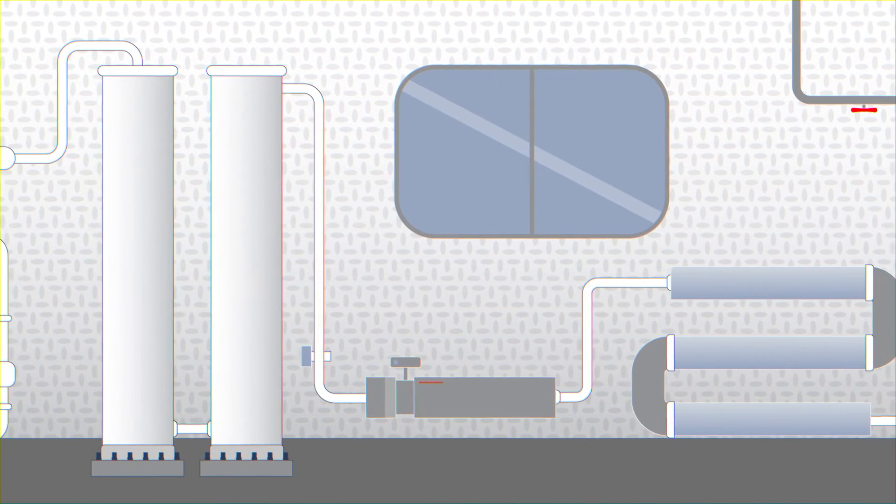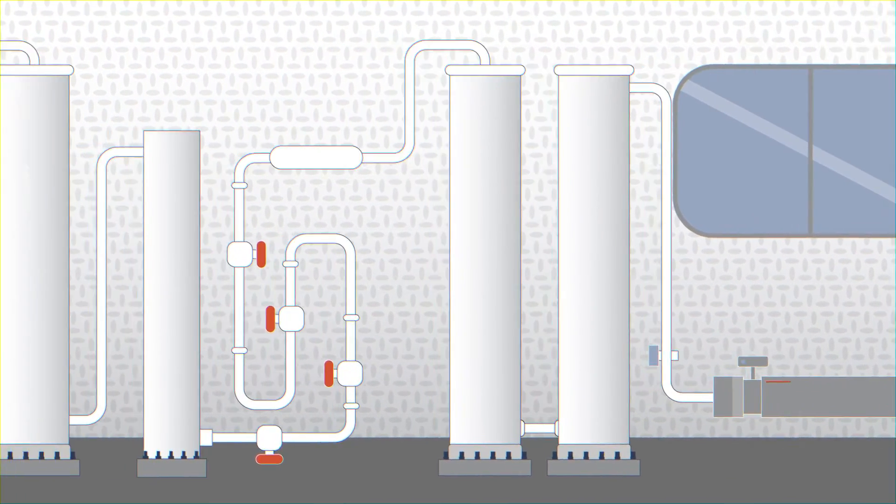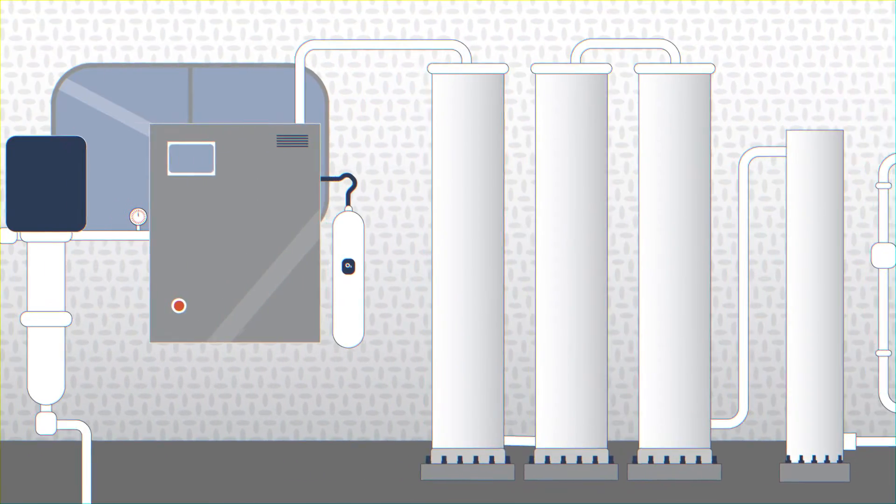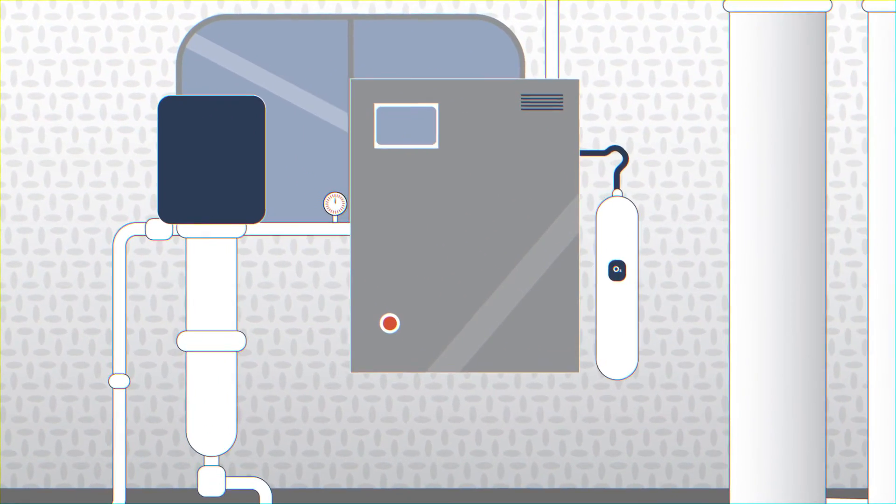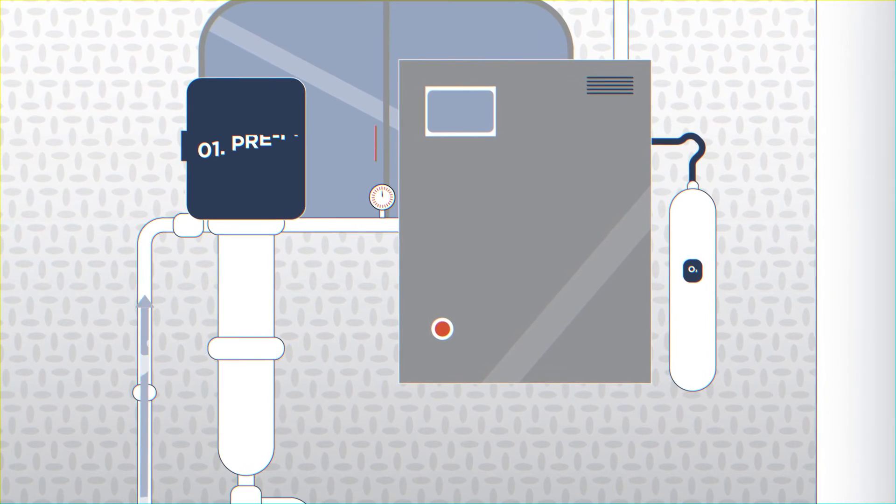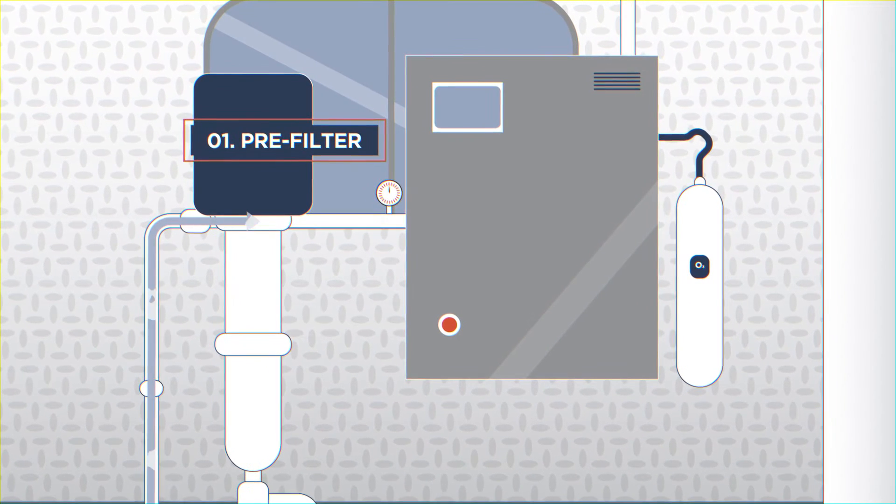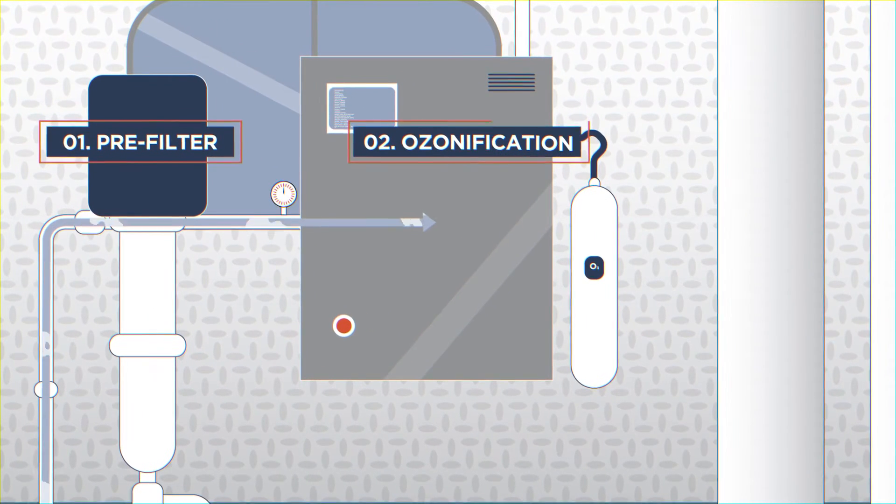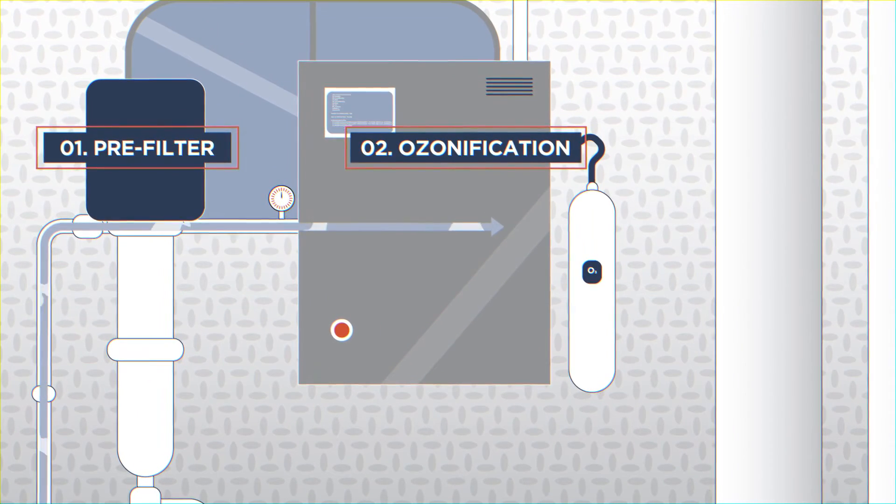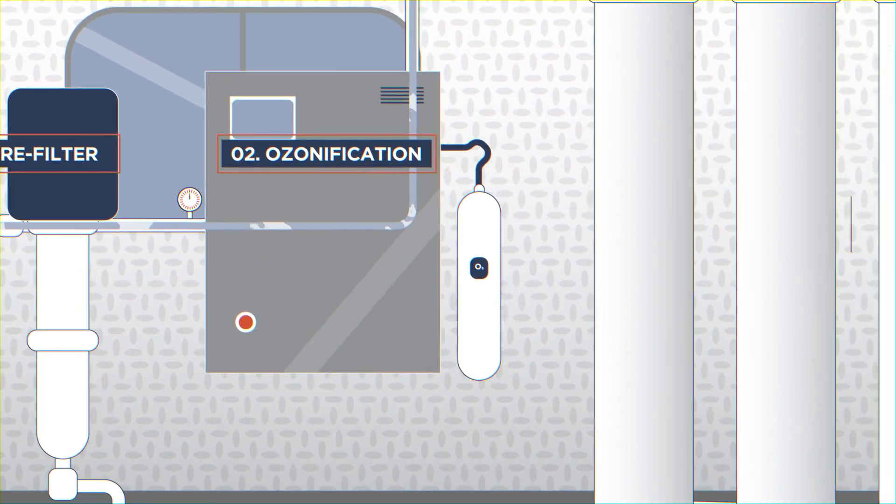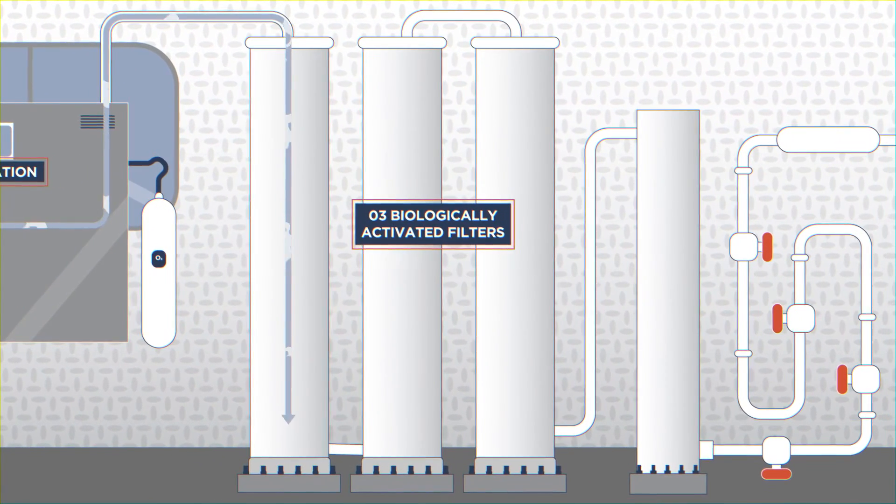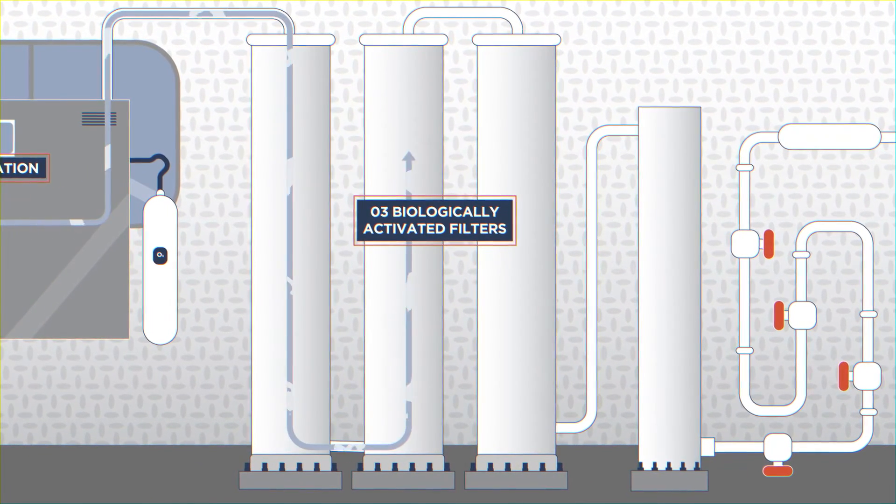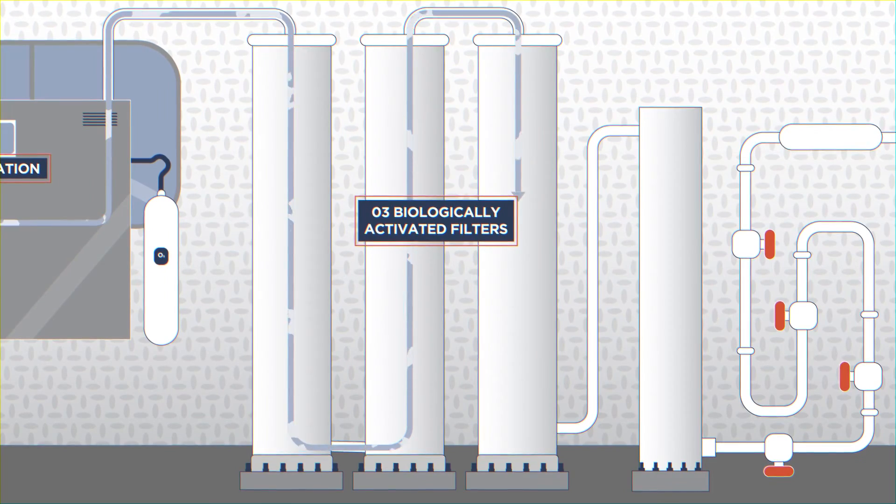Researchers at Colorado School of Mines have created a mobile DPR system with a six-step advanced filtration process. First, the water goes through a pre-filter getting rid of larger objects. Then it goes through an ozone generator to oxidize contaminants. From there, the water moves into biologically activated filters, which further break down compounds still in the water.